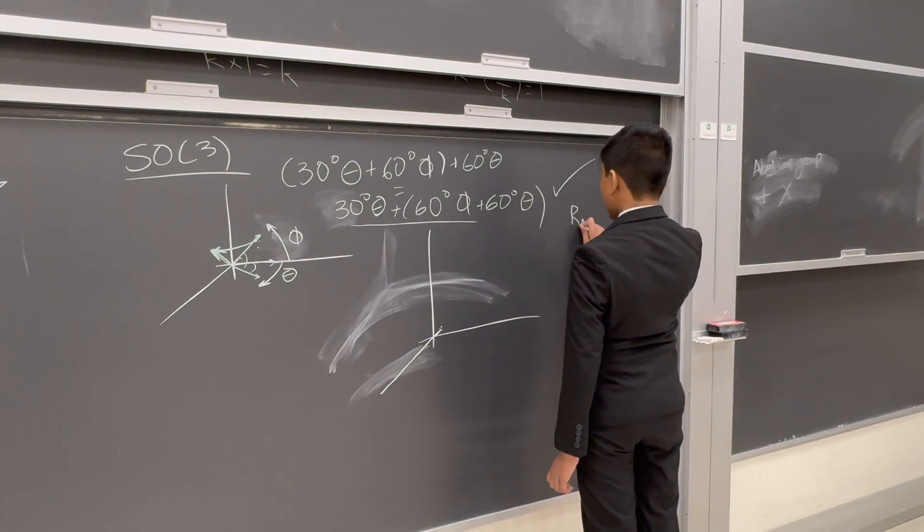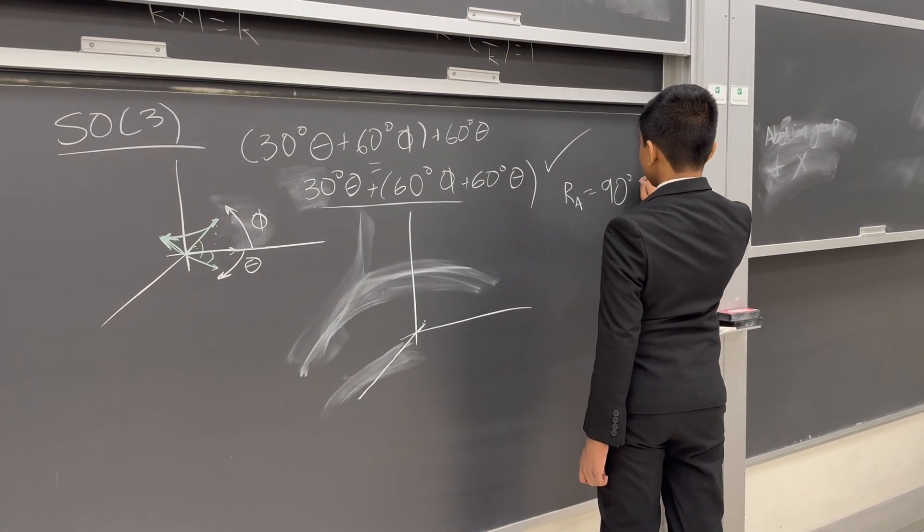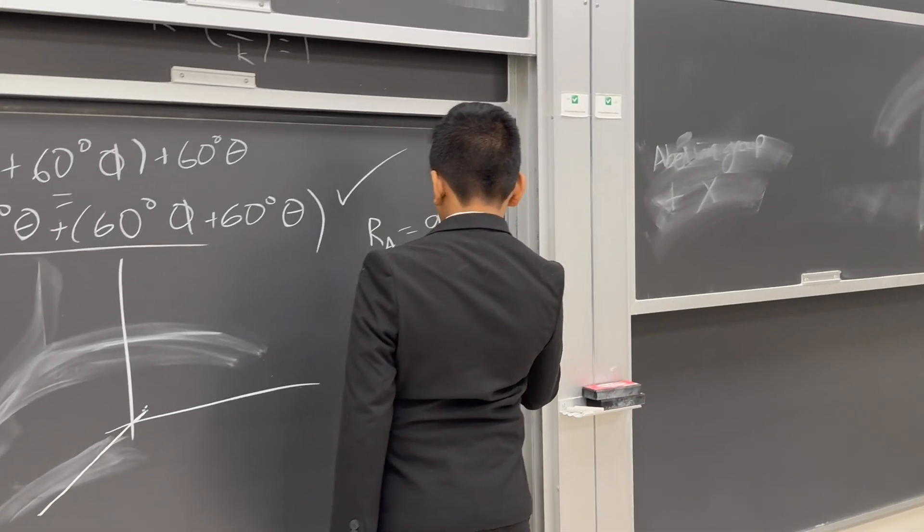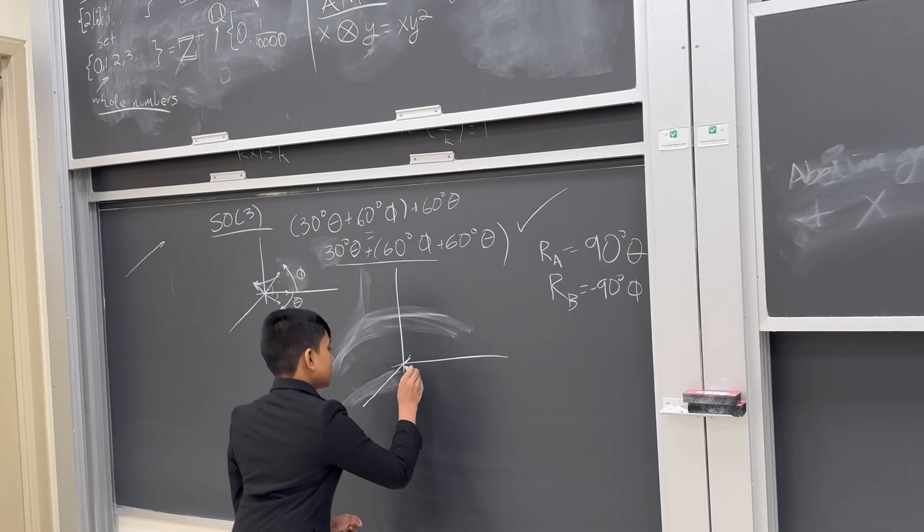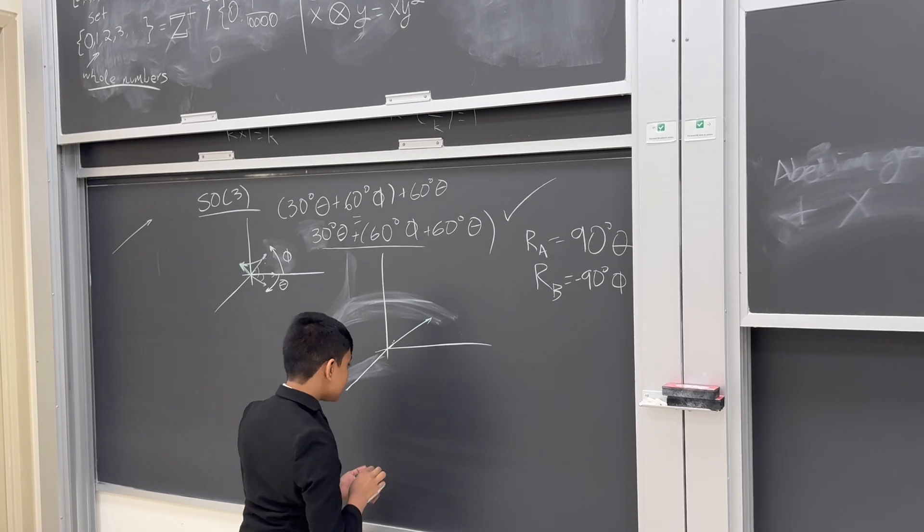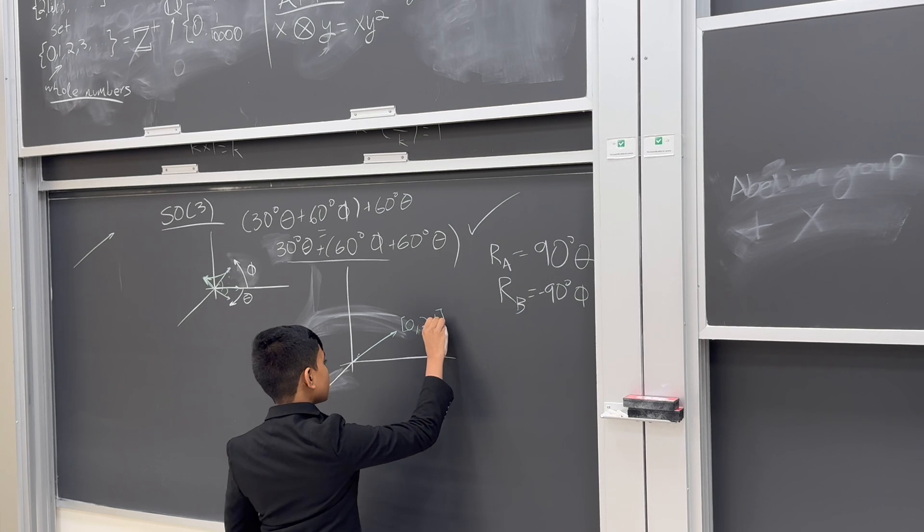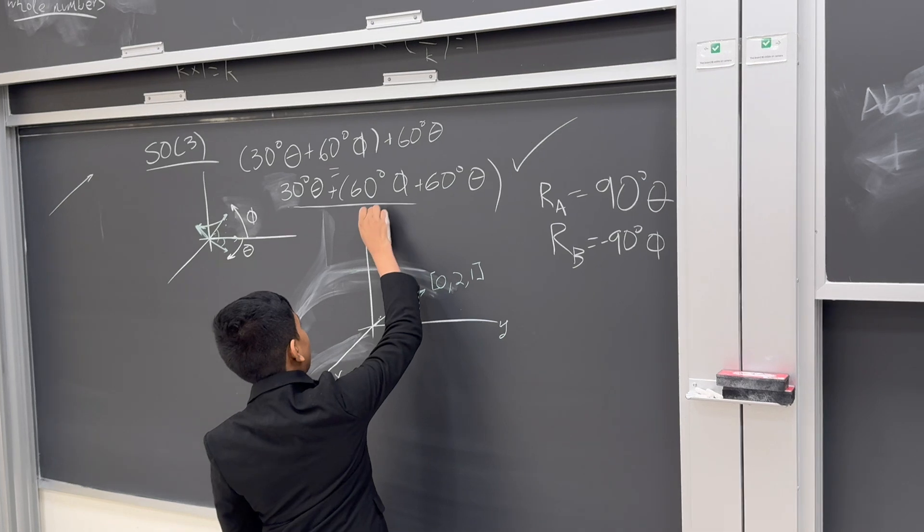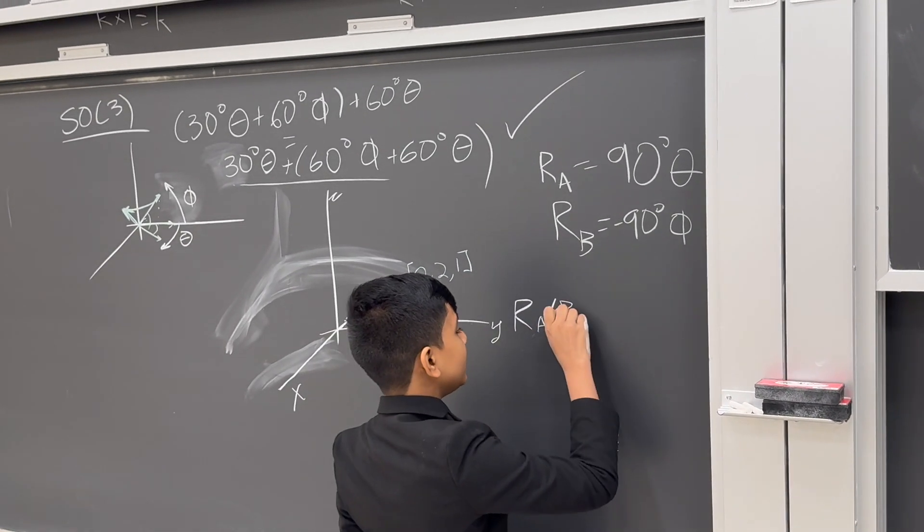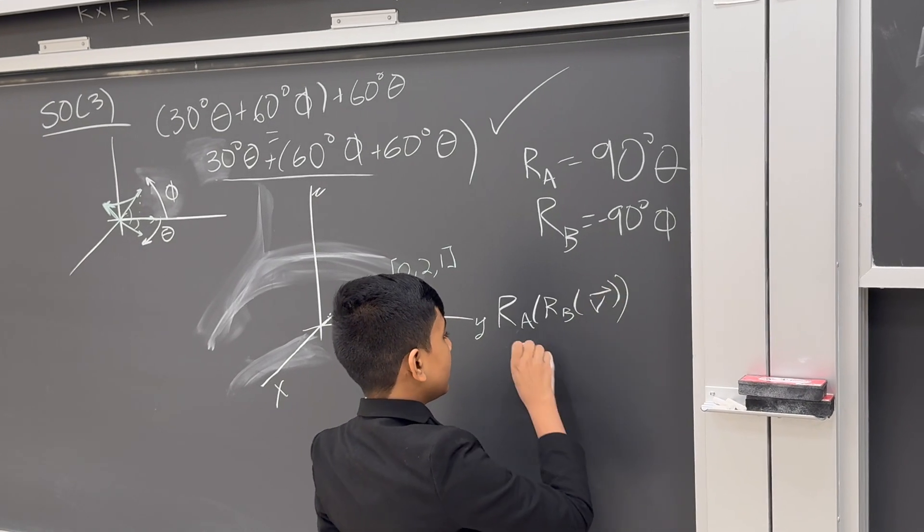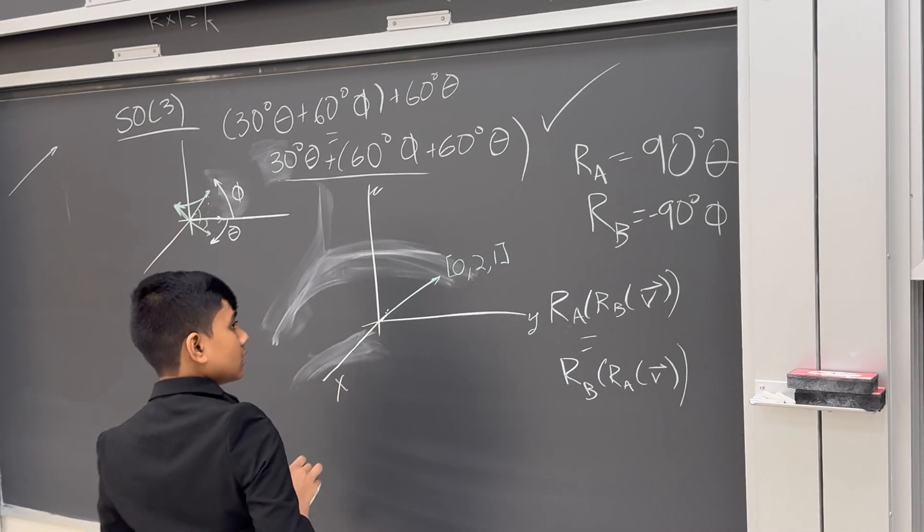And rotation B to be minus 90 degrees phi. So, now, let's draw this vector right here. This is going to be (0, 2, 1). So, now, let's see if R_A of R_B of V is equal to R_B of R_A of V. So, R_A is 90 degrees theta.